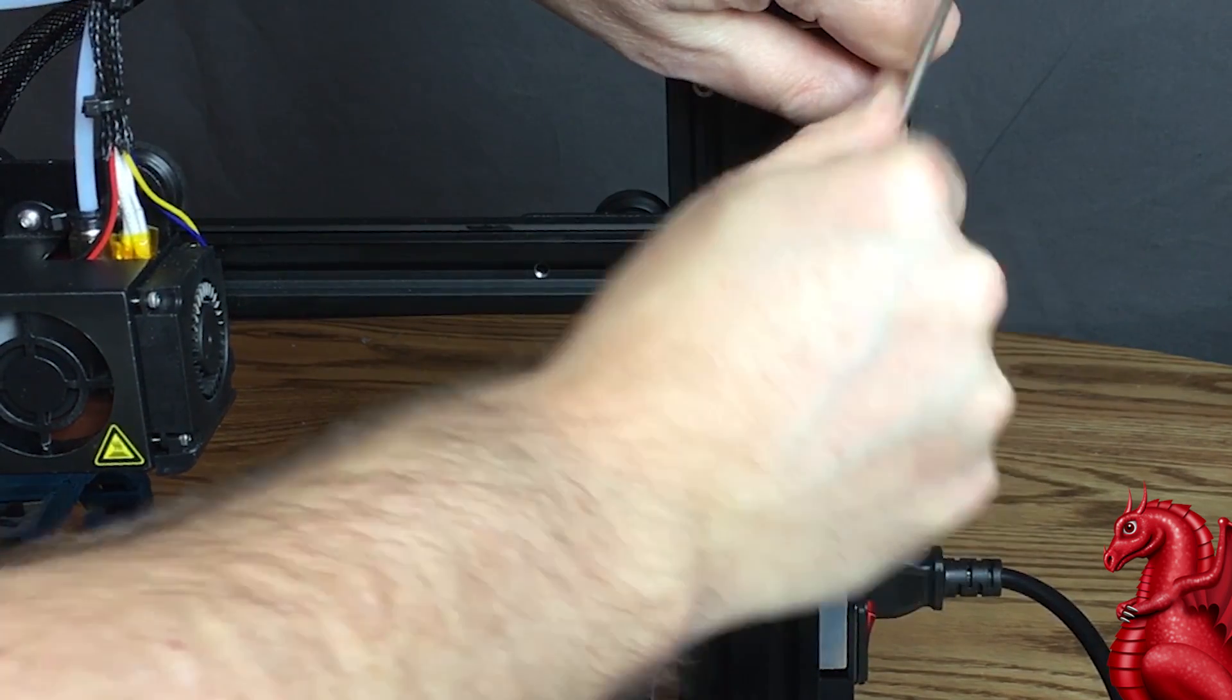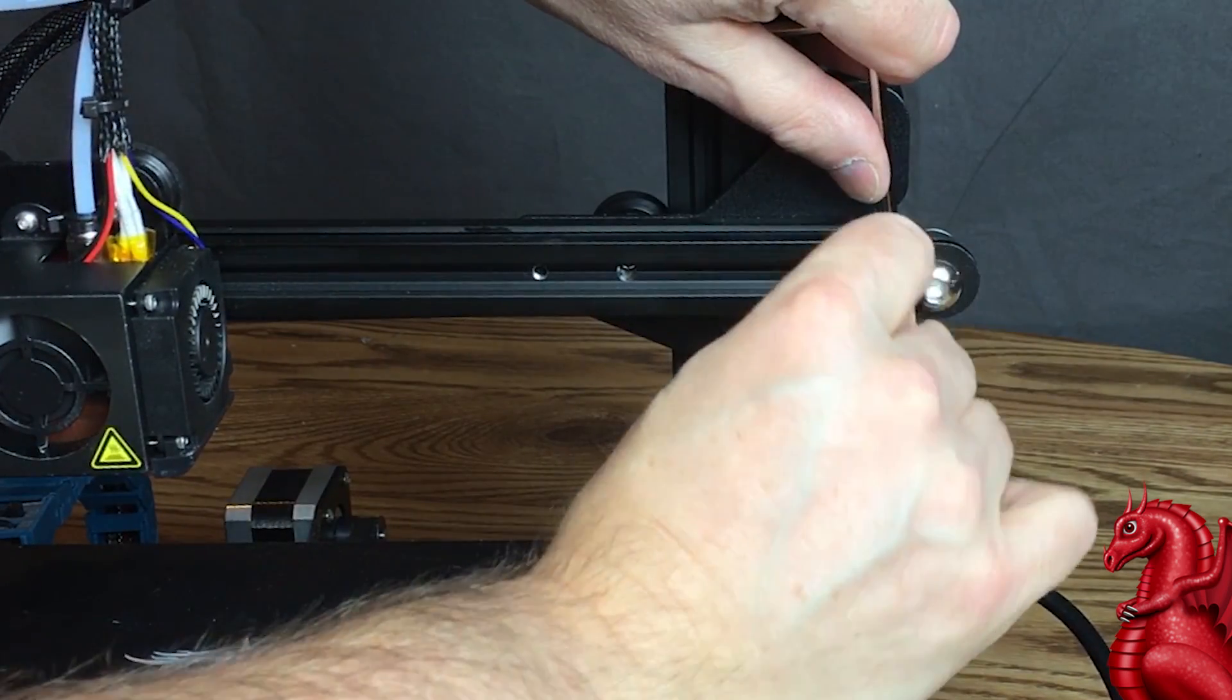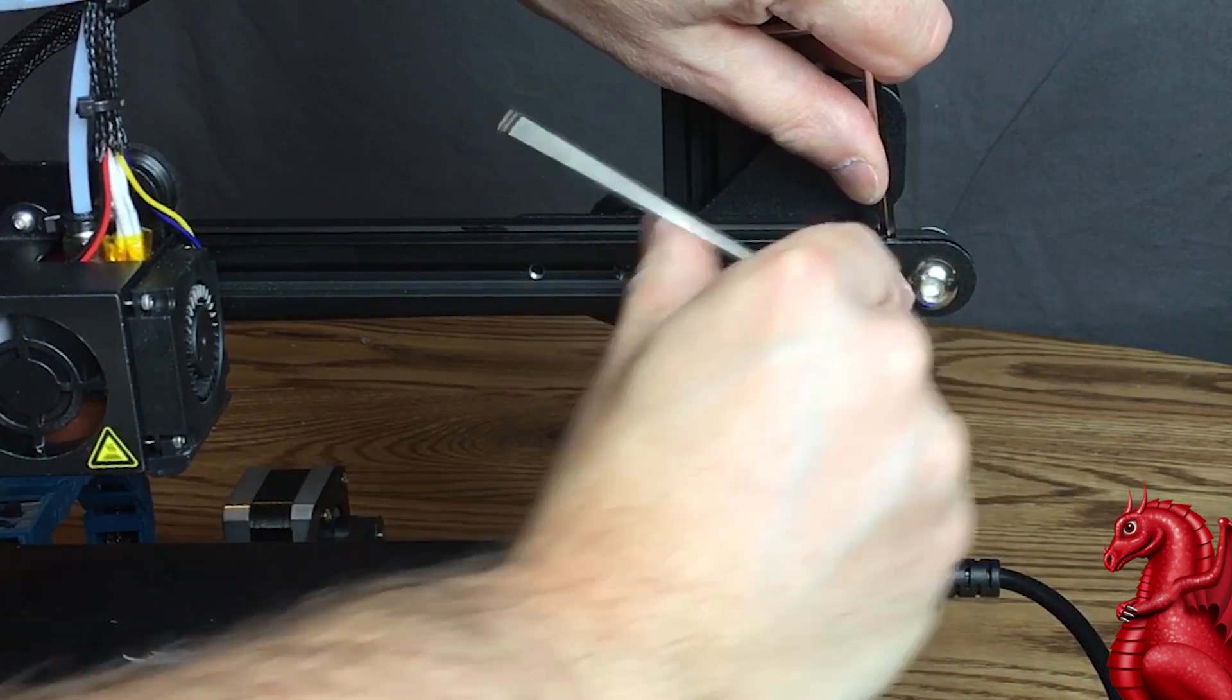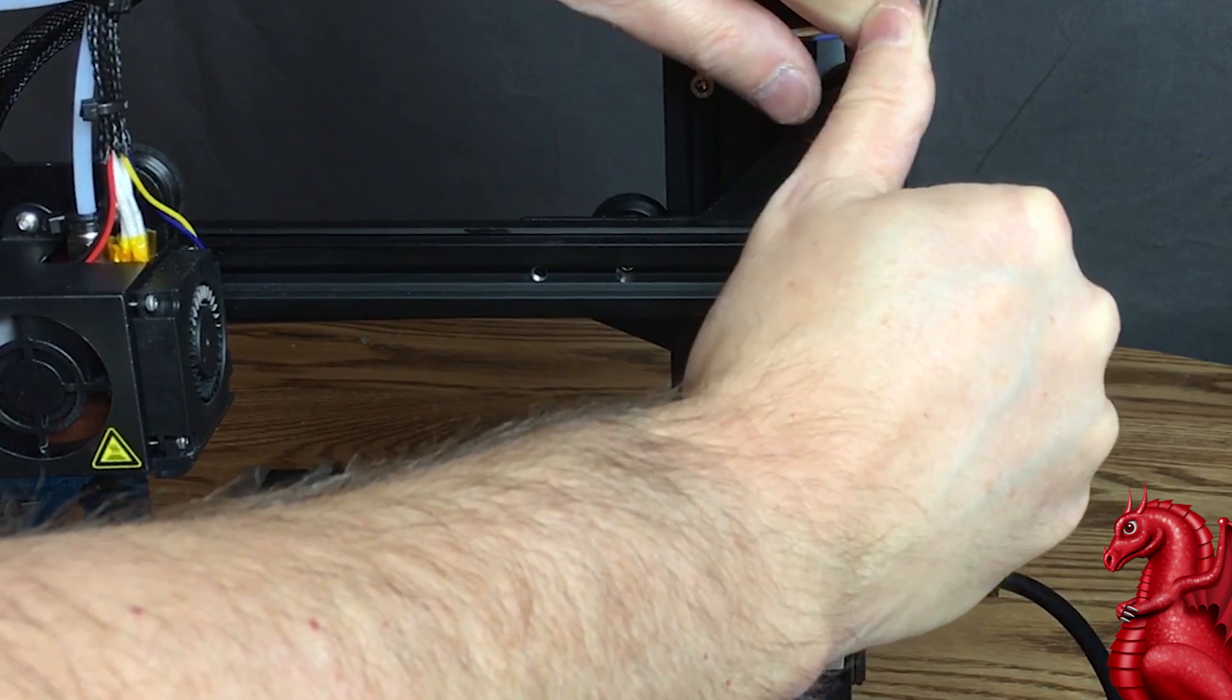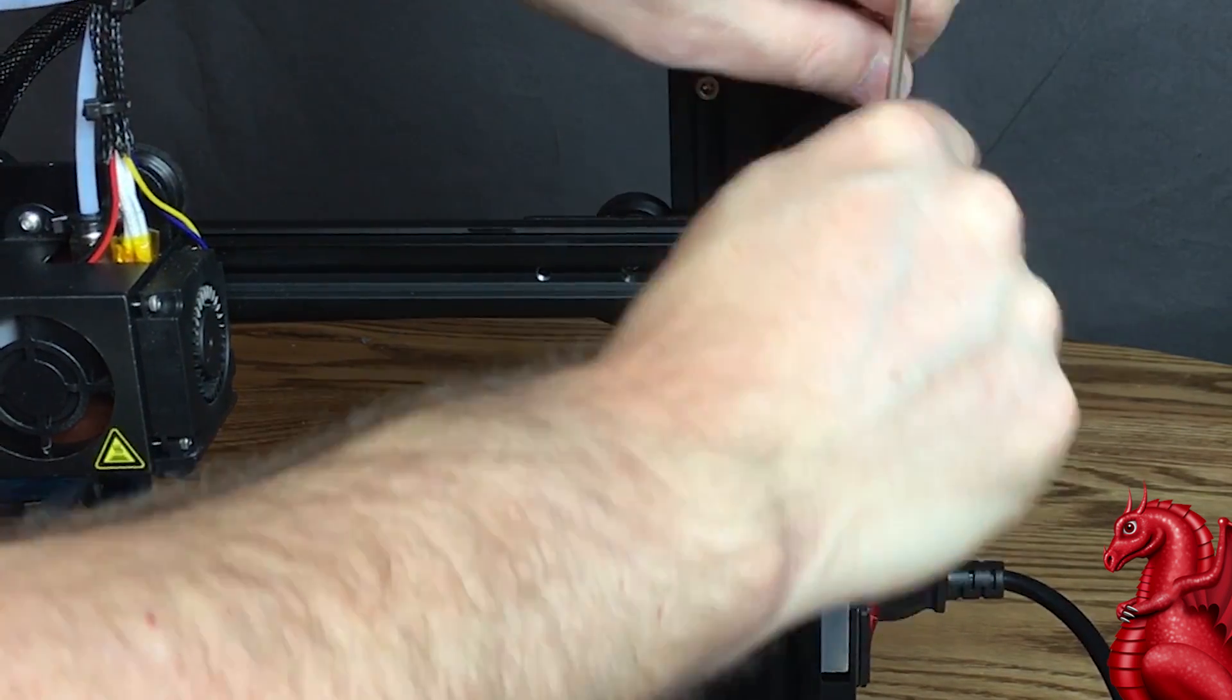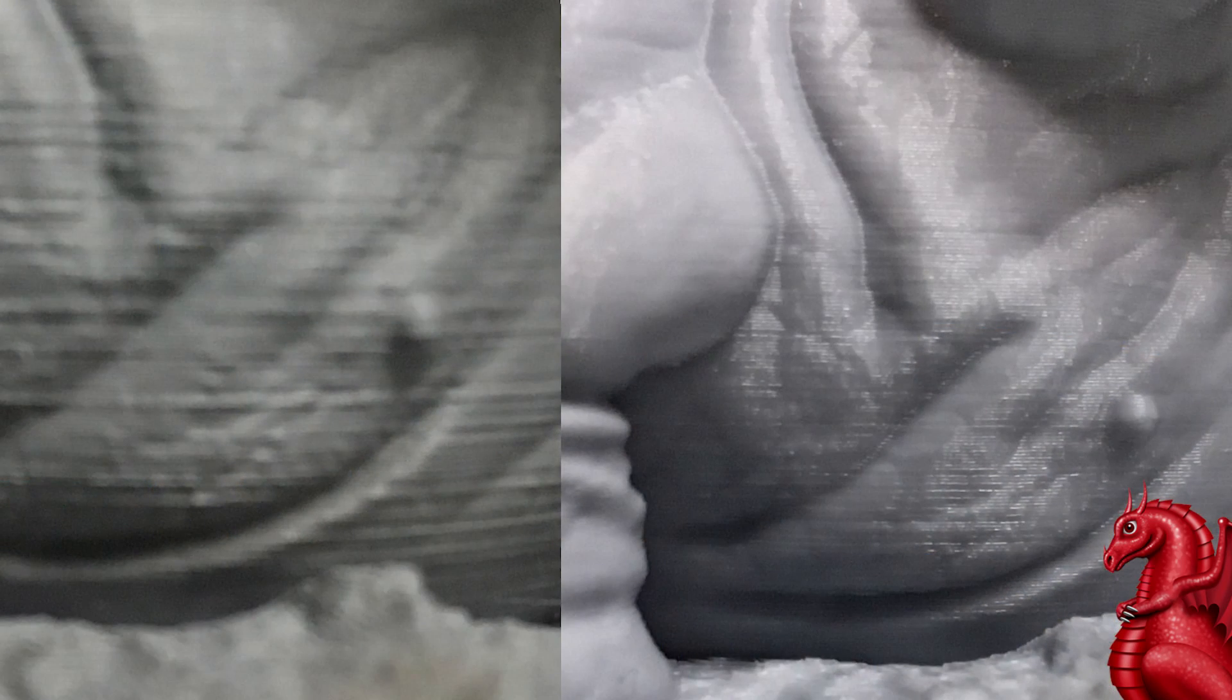Once this is done, you can repeat this for the y-axis if needed. In my case, it was just the x-axis. The y-axis was plenty tight from the factory still and didn't have any issues, but the x-axis had loosened up a little bit. And as you can see here, the difference is night and day as far as layer quality, just from adding that little extra tension to the x-belt.